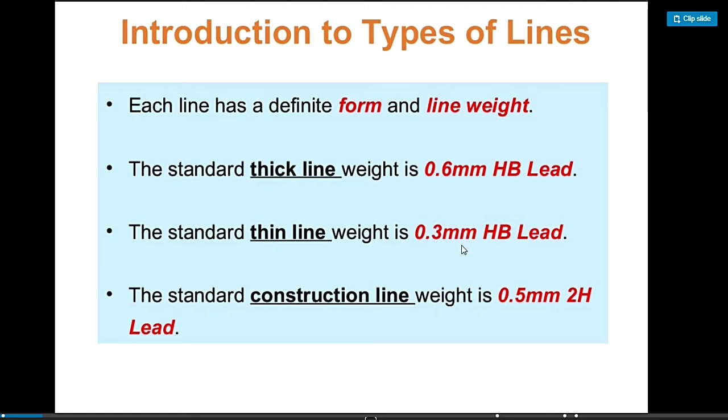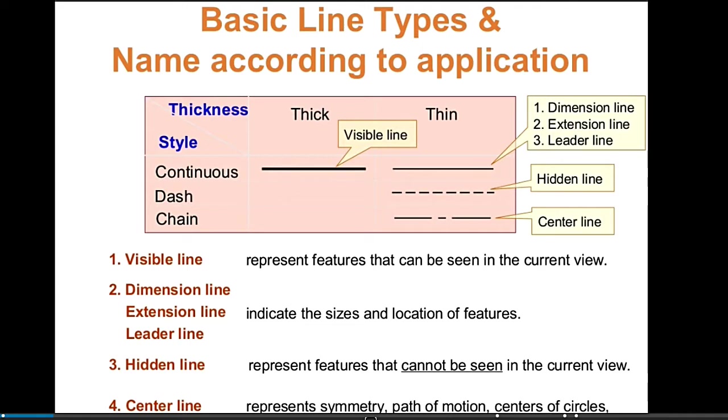Before, we used 0.2, sometimes 0.1, but those break easily. The lead at 0.2 and 0.1 breaks easily when using pencil, so we use 0.3. The standard construction line and object line is 0.5 mm in diameter for the pencil or technical pen used in drawing.